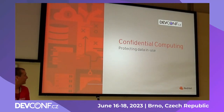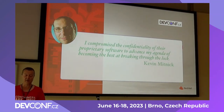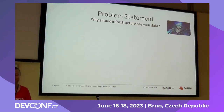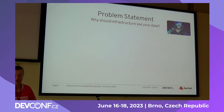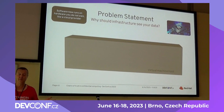So what is confidential computing? Confidential computing is mostly about protecting data in use. There's a quote from Kevin Mitnick: "I compromise the confidentiality of proprietary software to advance my agenda of becoming the best at breaking through." Hackers typically try to do that. The problem with infrastructure is that your infrastructure today is where you run your stuff, but why should your infrastructure see your data? Your software now runs on someone else's computer, also known as the cloud.